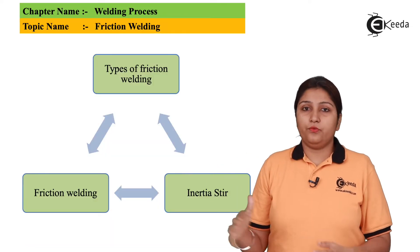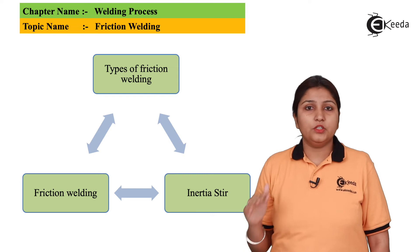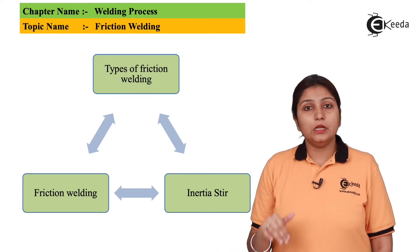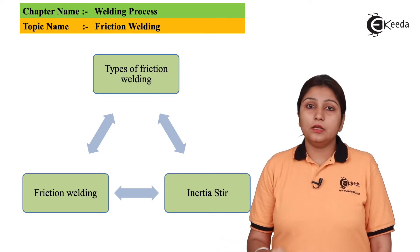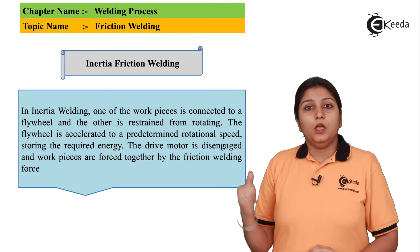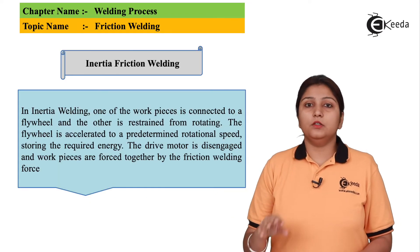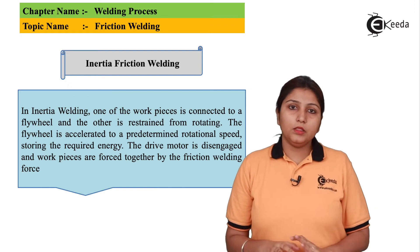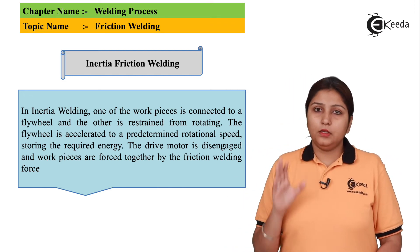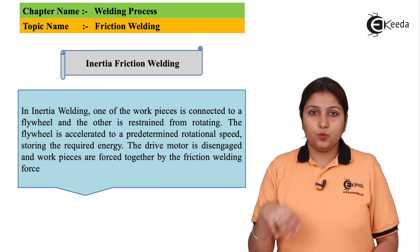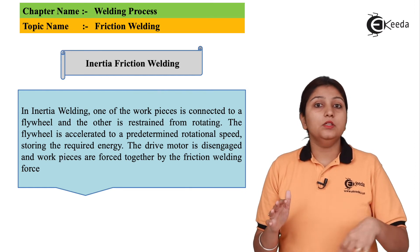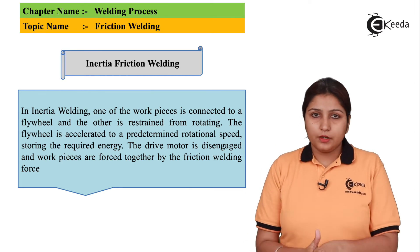There are two types of friction welding. One is normal friction welding in the horizontal position and the second is stir welding in a vertical position. The first type is known as inertia friction welding, where one part is stationary and the other is rotating and they are both in contact.